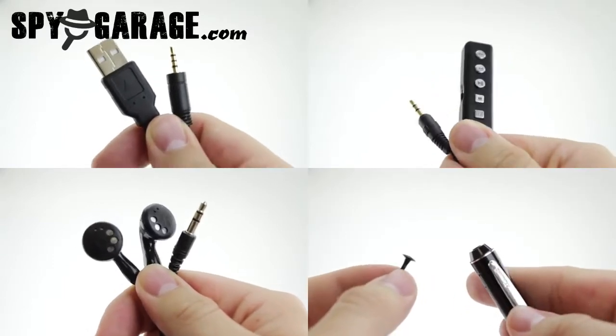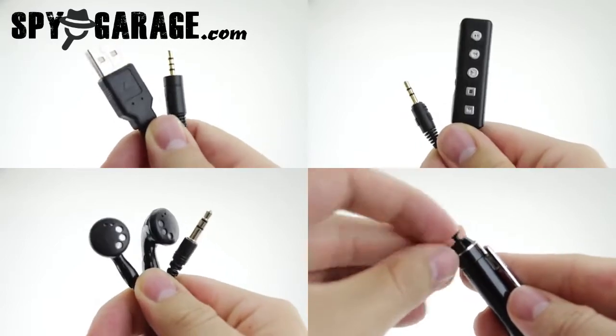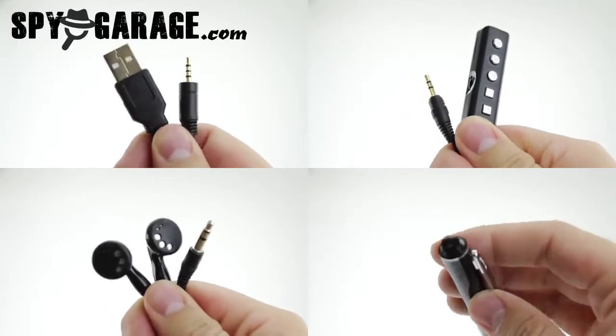Also available is a custom-made cap that inserts directly into the top, hiding the auxiliary jack and eliminating any evidence that this is more than just a pen.